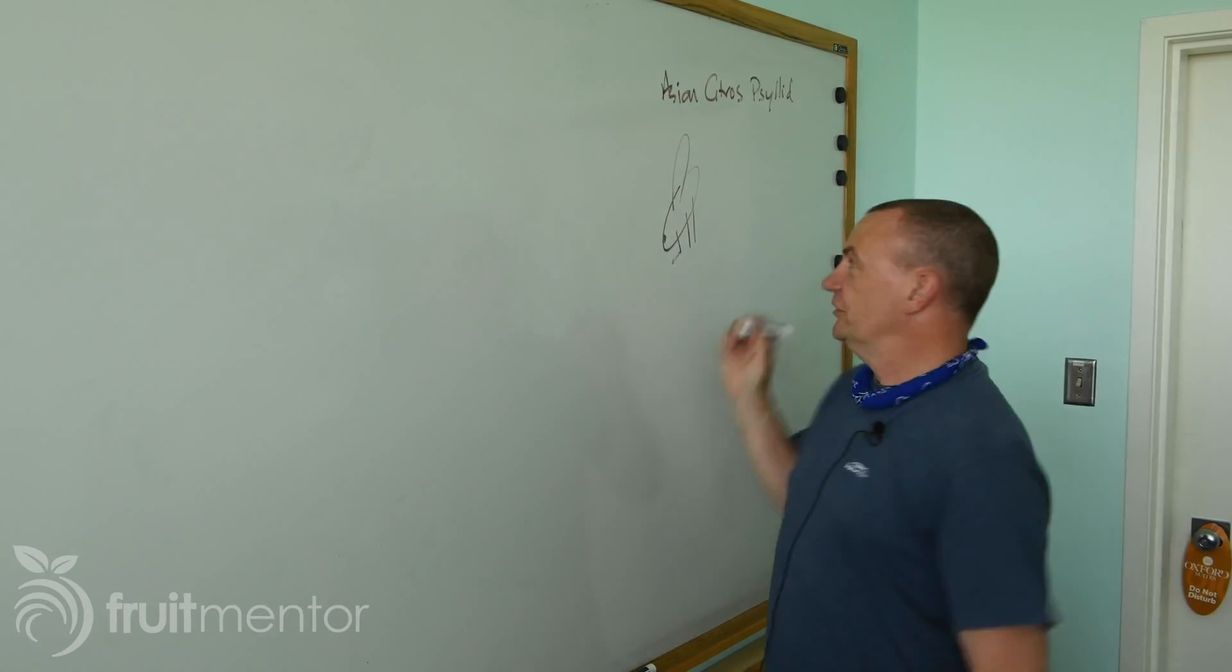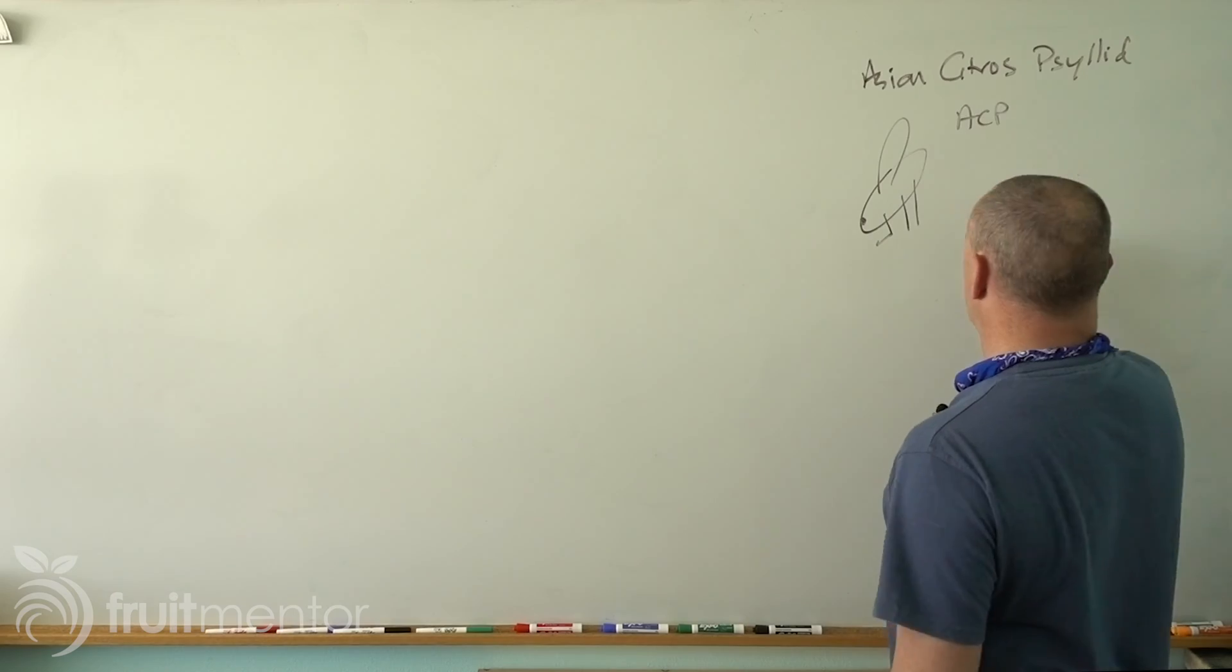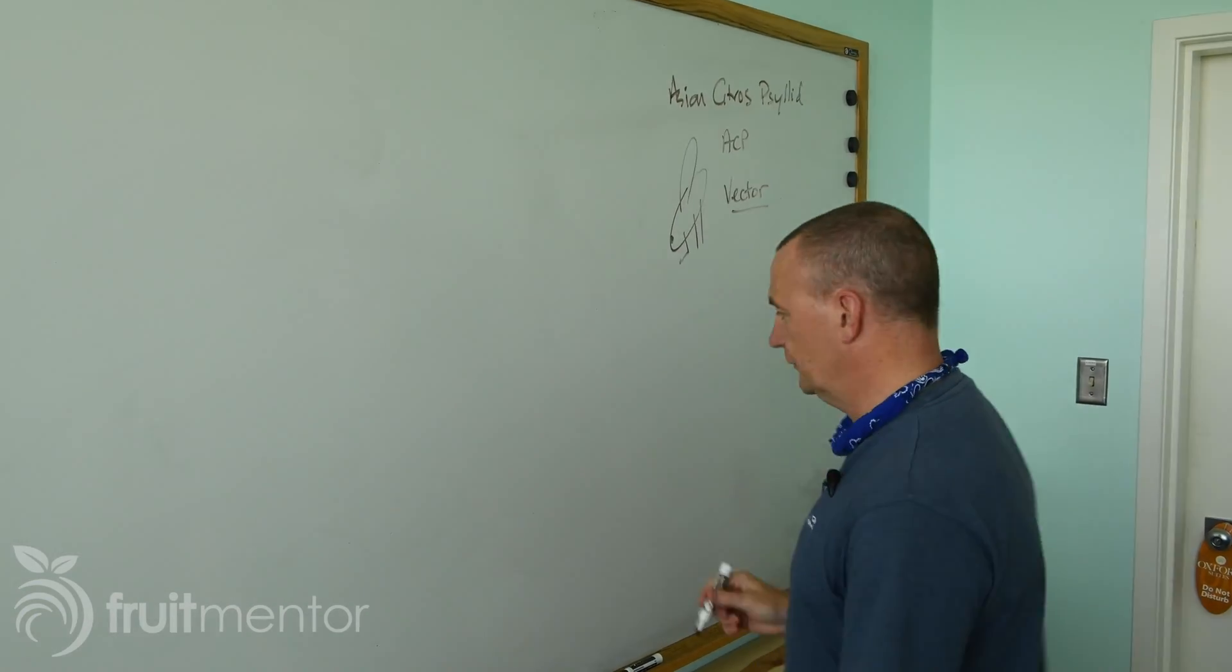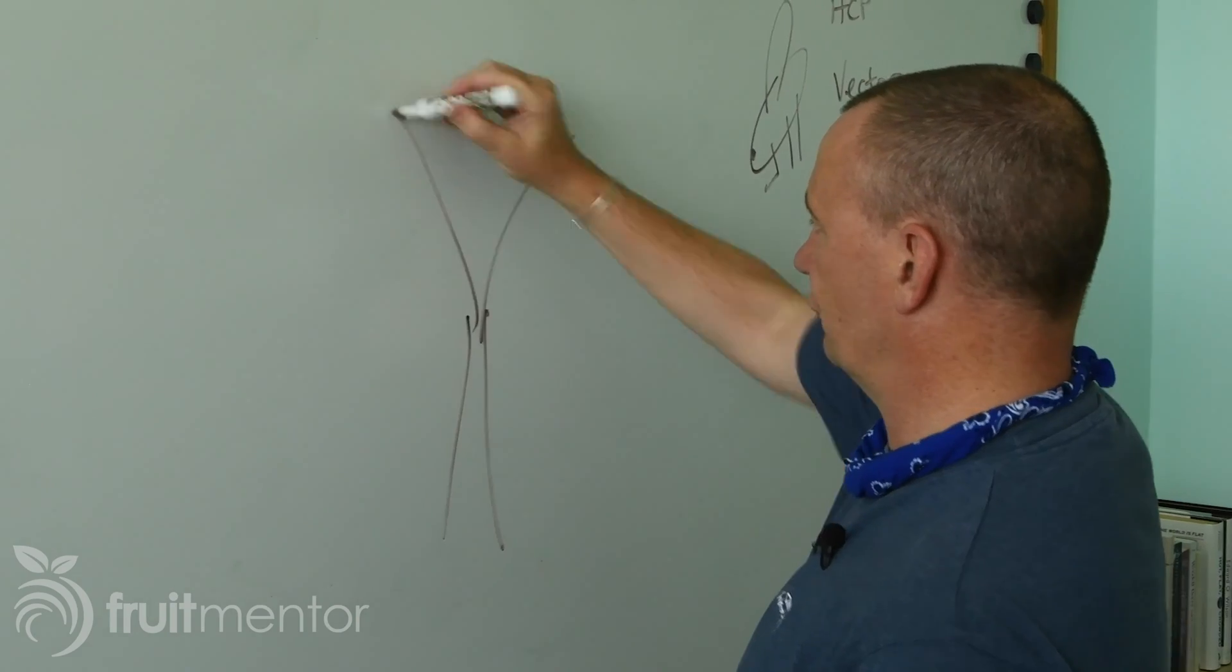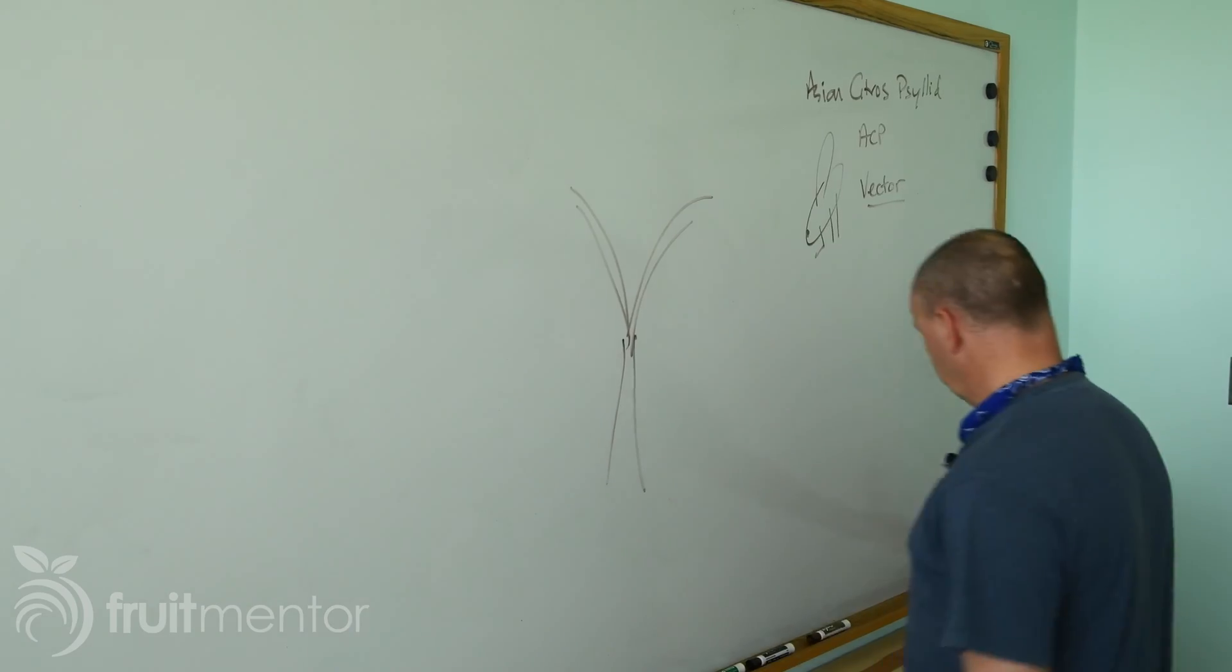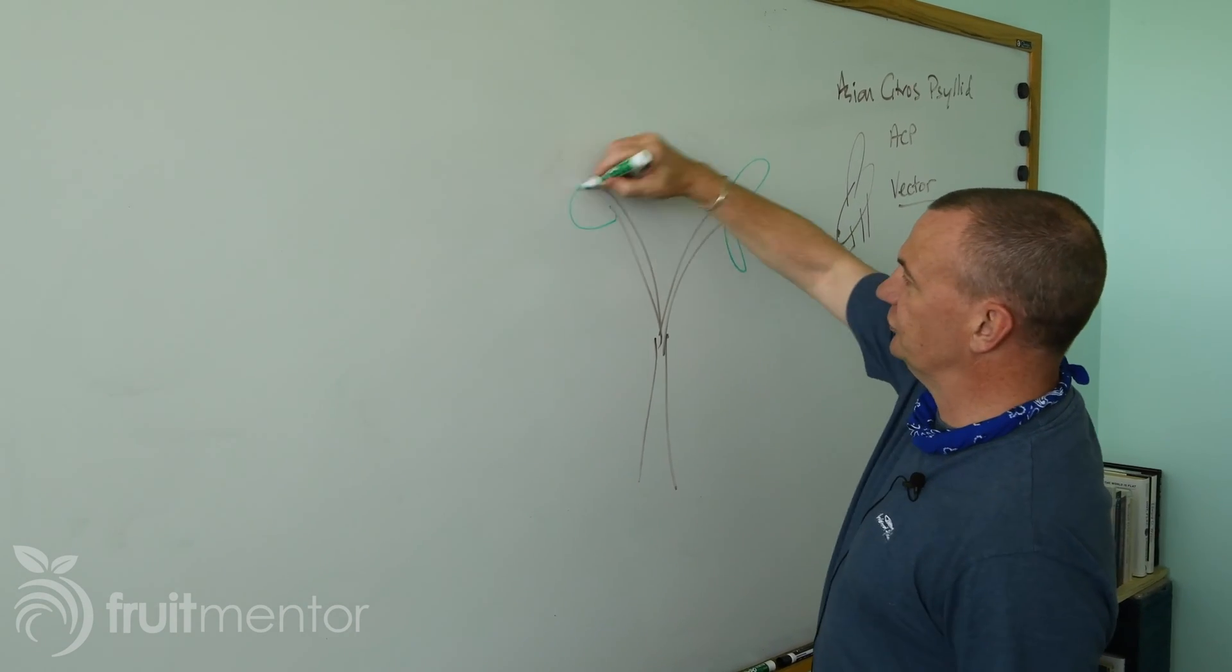And the Asian citrus psyllid or ACP, as it gets referred to, is the vector for the disease. This is the thing that spreads it around. And then, of course, we've got our citrus trees that we're interested in growing. And this thing only matters because we want to grow citrus because it's delicious and healthy and good for us. So we have our citrus trees.